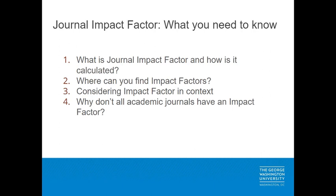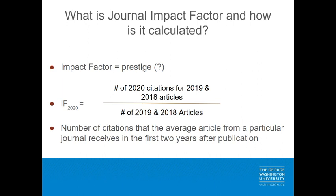So what is the impact factor and how is it calculated? Journal impact factor is a metric which is meant to convey the importance or prestige of a particular journal, with the idea being that the higher the impact factor, the more important or prestigious the journal is. You can see a formula here for how impact factor is calculated, but basically an impact factor is the number of citations that the average article from a particular journal receives in the first couple years after publication.